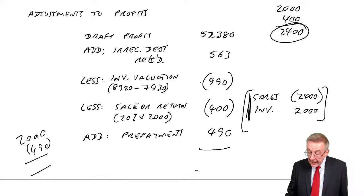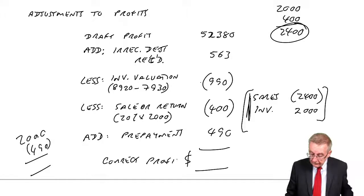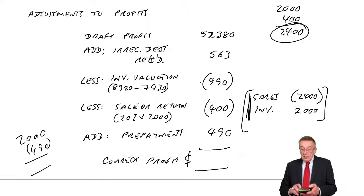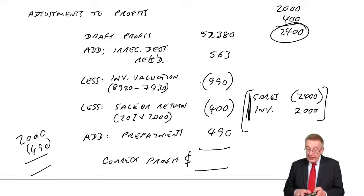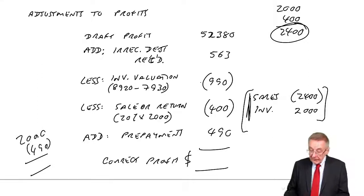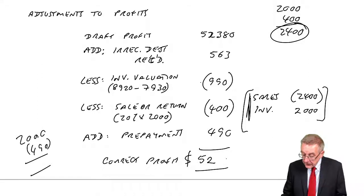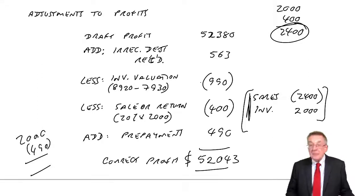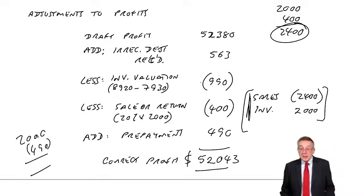And there we are. So what is the correct profit? The calculator: $52,380 plus $563 minus $990 minus $400 plus $490. I get $52,043. So there's the correct, the adjusted profit.